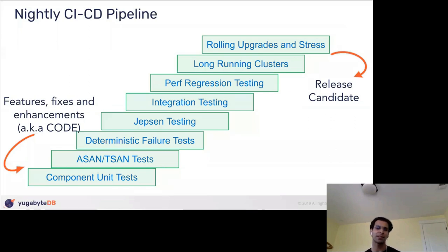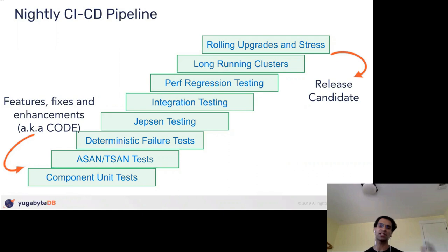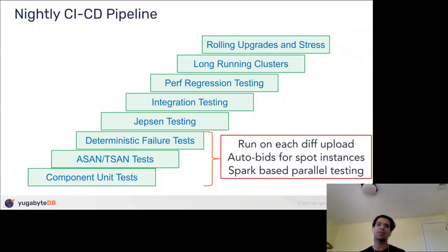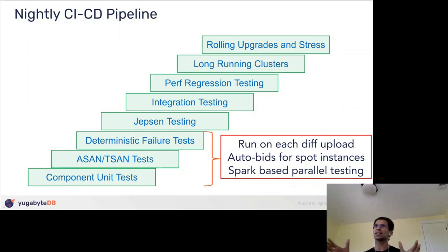On testing: we have a fairly sophisticated CI/CD pipeline — sometimes when writing this slide I realized it almost rivals how much work goes into the database itself. Once you put in your enhancements or fixes, it goes through a long pipeline before a release candidate comes out, followed by specific manual testing depending on the exact feature being delivered. Key aspects include a lot of component unit tests, ASAN/TSAN instrumentation, and deterministic failure injection — encoding known failures like what happens when a specific node goes down right before a particular operation occurs.